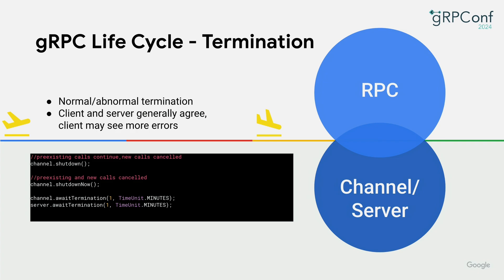When a server receives a request successfully, it can complete successfully, but it is also possible it will end up in error — due to server errors, client cancellation, or network errors. Normally the client and server will agree on the RPC status, but it is also possible that the server sees the request as successful while the client sees an error status due to communication reasons. It is important to shut down the server and channel to reclaim resources. You can call shutdown on the channel object, which will cancel new calls immediately but let pre-existing calls continue, or do a forceful shutdown that cancels both new and pre-existing calls immediately. Shutdown is asynchronous — you can call await termination to wait for all results to complete, and it will give up if a certain timeout is reached.